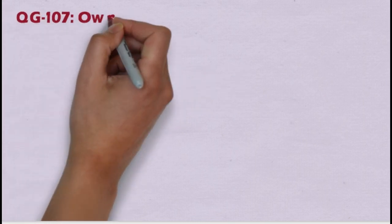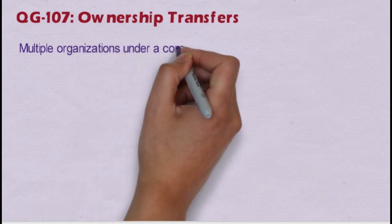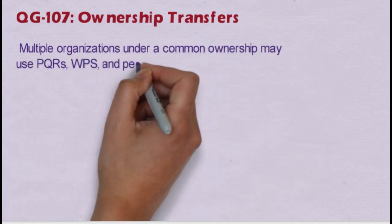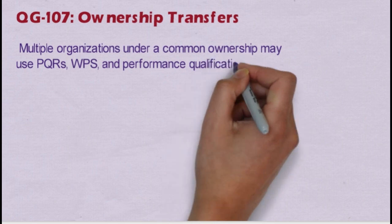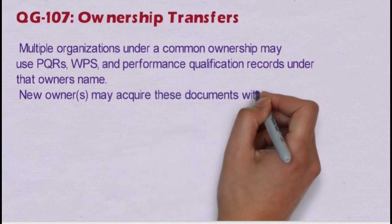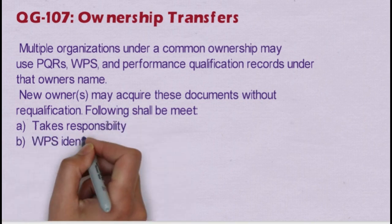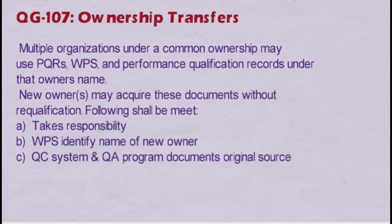Let us move to QG107, which states the ownership transfer information. Multiple organizations under a common ownership may use PQRs, WPSs, and performance qualification records under the owner's name. A new owner may acquire these documents without requalification, provided the following conditions are met: they take responsibility, the WPS identifies the name of the new owner, and the QC system and QA documents reference the original source. For example, when one company acquires another, the new company can use the documents of the old company.